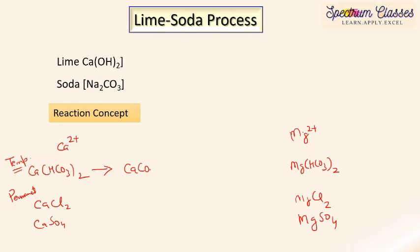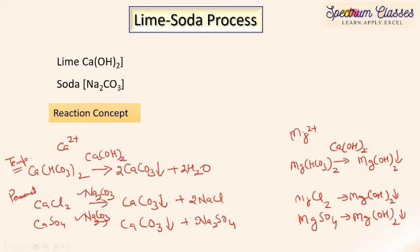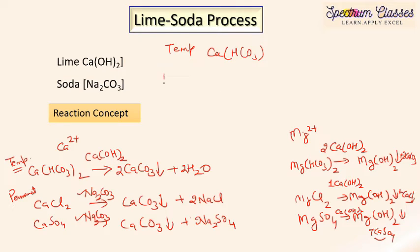The main objective of the lime soda process is to produce calcium carbonate (CaCO₃), which is insoluble, and magnesium hydroxide Mg(OH)₂, which is also highly insoluble and settles at the bottom. From calcium salts, we produce CaCO₃; from magnesium salts, we produce Mg(OH)₂ by reacting with Ca(OH)₂, which provides the hydroxyl groups needed.